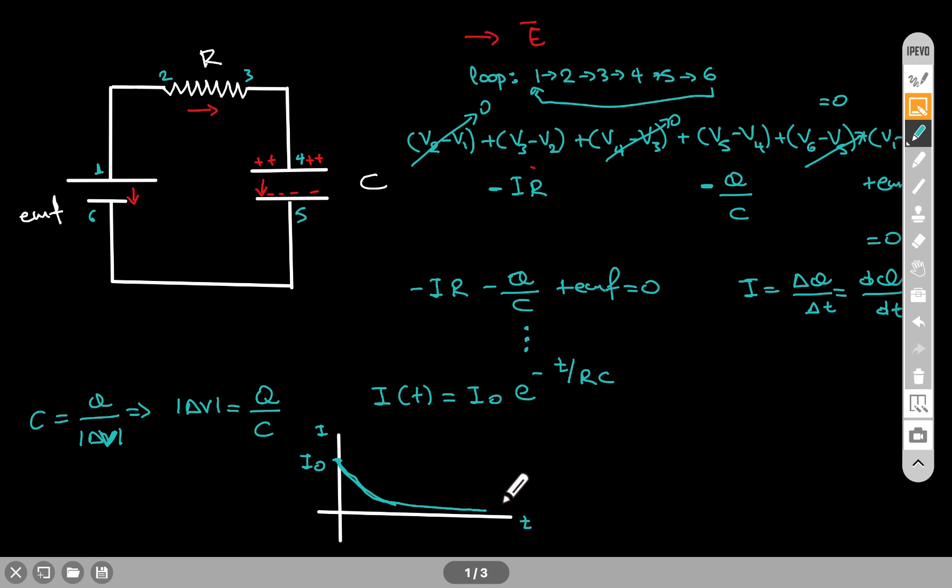your instrument will not be able to measure any current and practically the current will be zero. Now this is the current that flows in the circuit. And I0 is the maximum value, the value of the current at t equals zero. So this is the current at t equals zero.